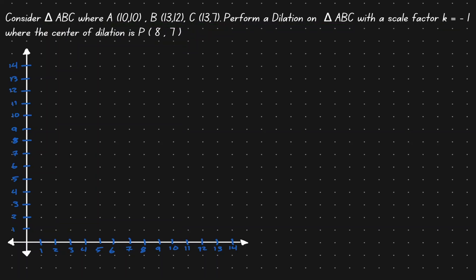Let's start by placing down the coordinate points for our triangle ABC. Now let's connect those points. And now let's place down our center of dilation at (8,7).